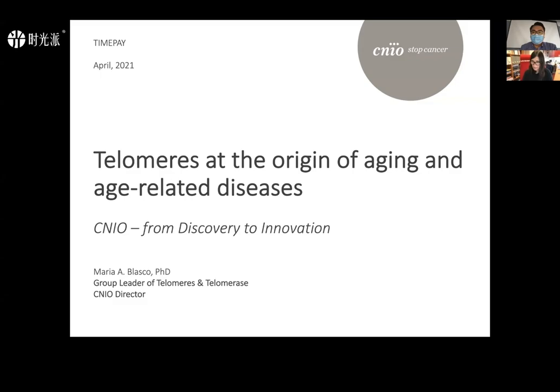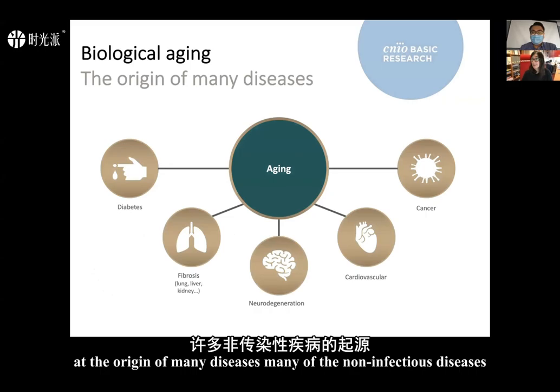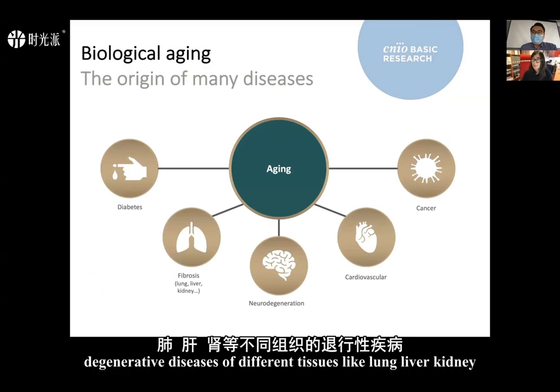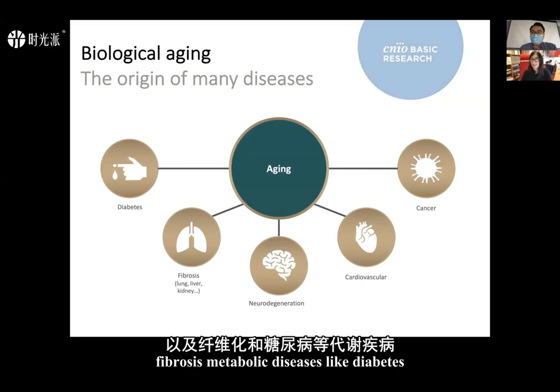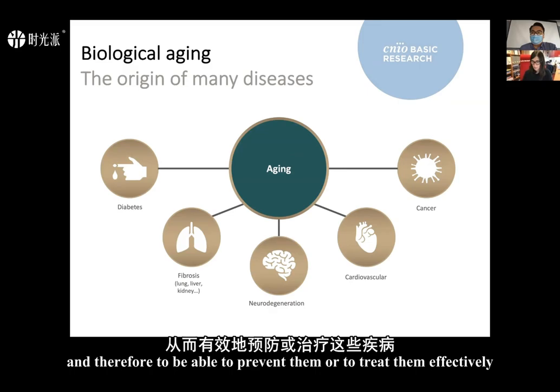My group has been working to try to understand aging from the molecular point of view, because we think that aging is at the origin of many diseases — many of the non-infectious diseases such as cancer, cardiovascular, neurodegenerative diseases, degenerative diseases of different tissues like lung, liver, kidney, fibrosis, and metabolic diseases like diabetes. So we think it's very important to understand aging from the molecular point of view to be able to understand the origin of these diseases and therefore to be able to prevent them or treat them effectively.